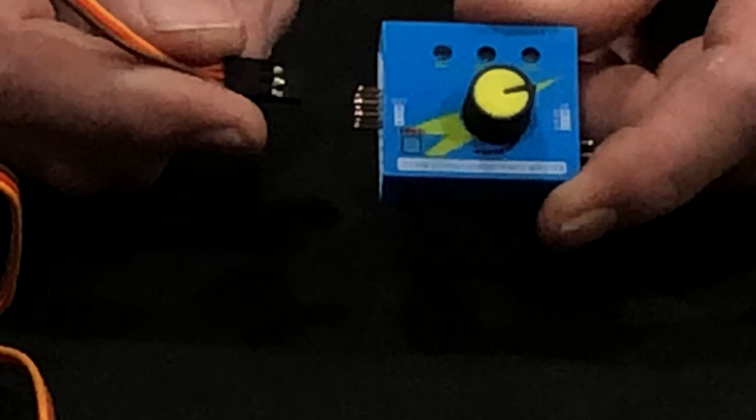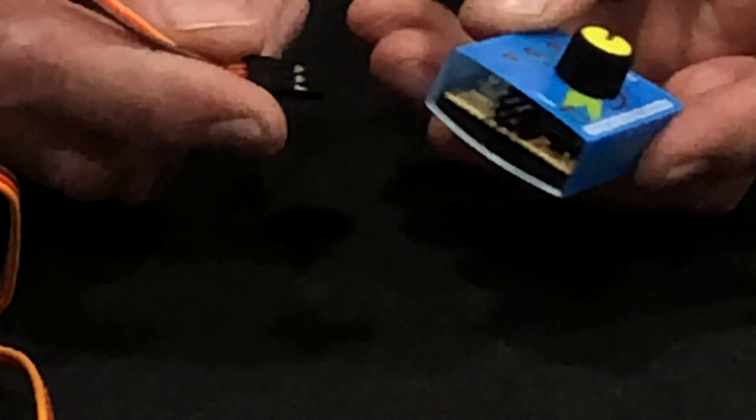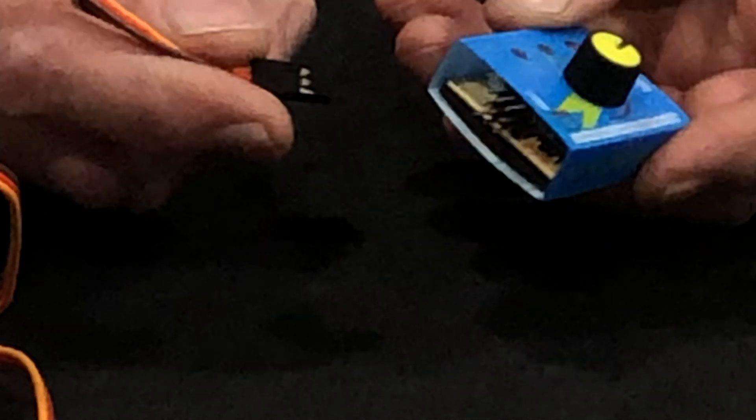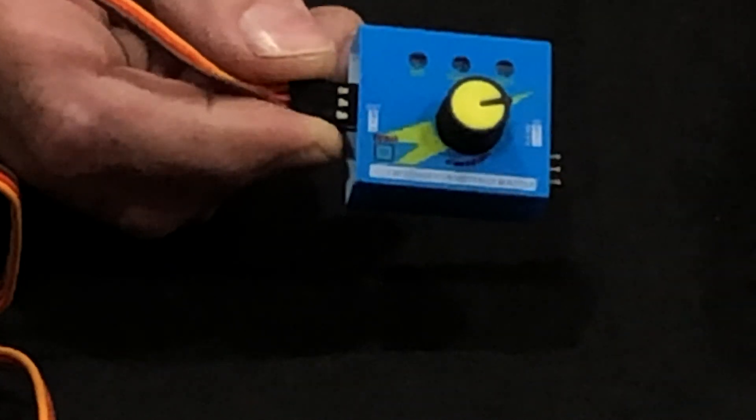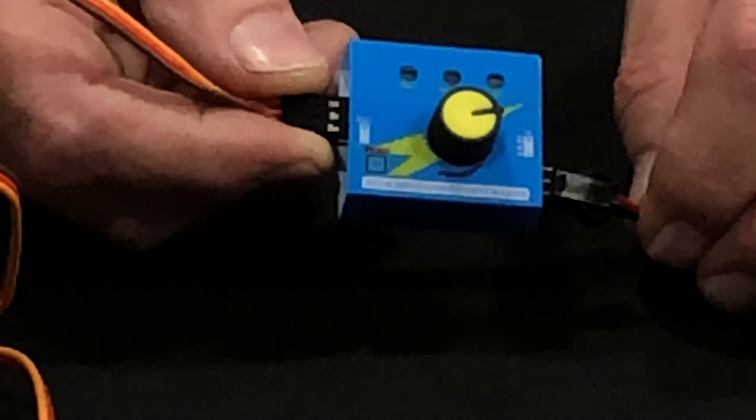Our servos plug into the other side. This is a three-channel servo tester, but we're going to plug one servo in at a time. Otherwise, they'll all move at the same time. You'll line it up horizontally. Be sure to read where the plus and minus is and plug it into place accordingly.